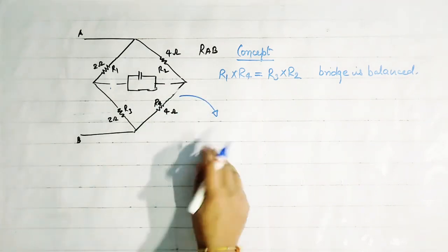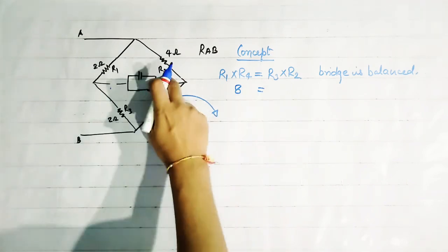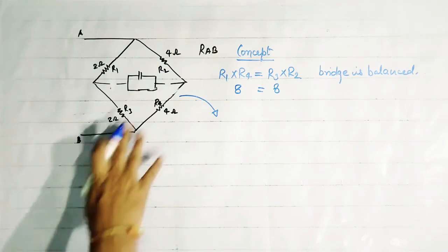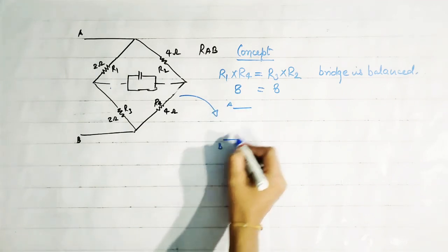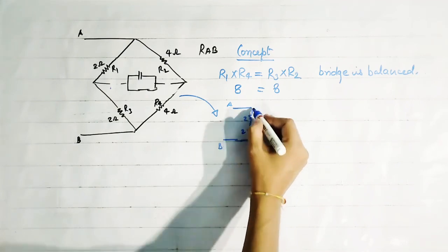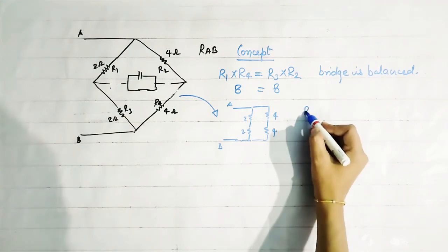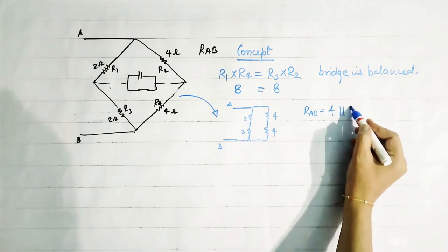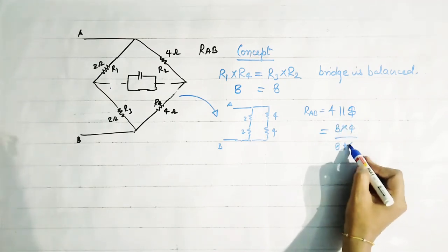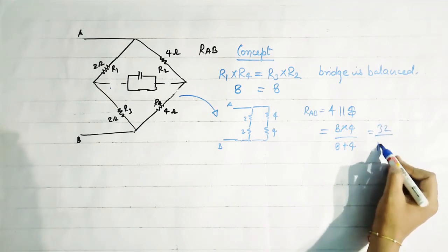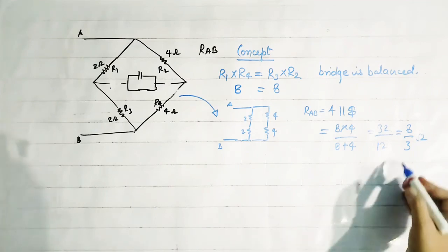We can redraw this circuit because here R1 × R4 equals 2 × 4 = 8, and R3 × R2 also equals 8. Both are equal, so the bridge is balanced and that branch is of no use. We redraw the circuit as: between A and B, 2 and 2 ohm in series, and 4 and 4 ohm in parallel to that branch. So RAB equals (2 + 2) parallel with (4 + 4), which gives 32 by 12 = 8/3 ohm.